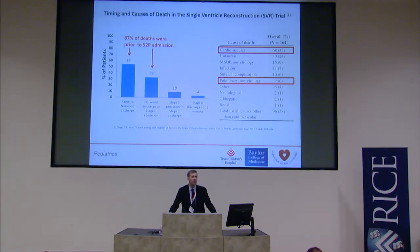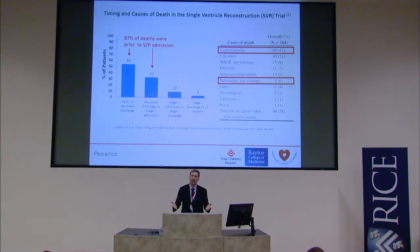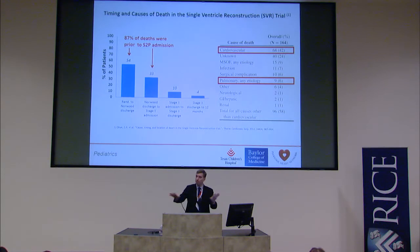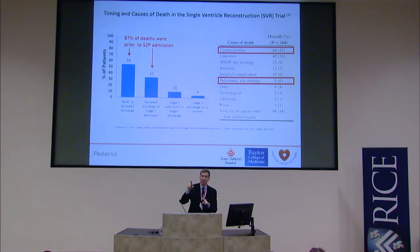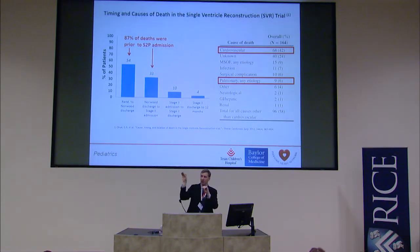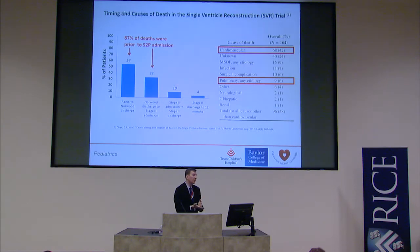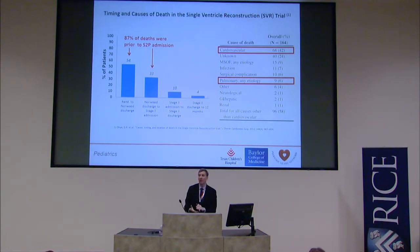The vast majority of deaths in these children occur between their first and second stage surgery — between about five days of life and six to nine months of life. During this time these children have a parallel circulation: the blood goes from the heart, gets split, a percentage goes to the body and a percentage to the lungs, and then it mixes. It's this mixing that causes hemodynamic instability, which leads to various types of deterioration. The majority of deaths are due to cardiac arrest or respiratory arrest.